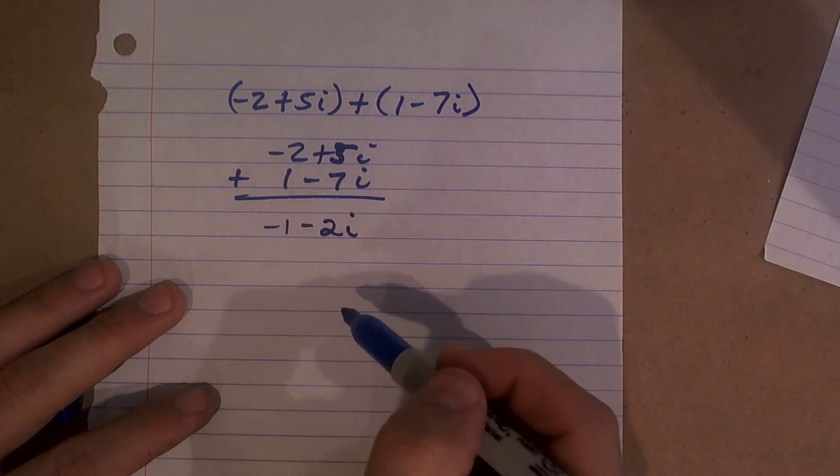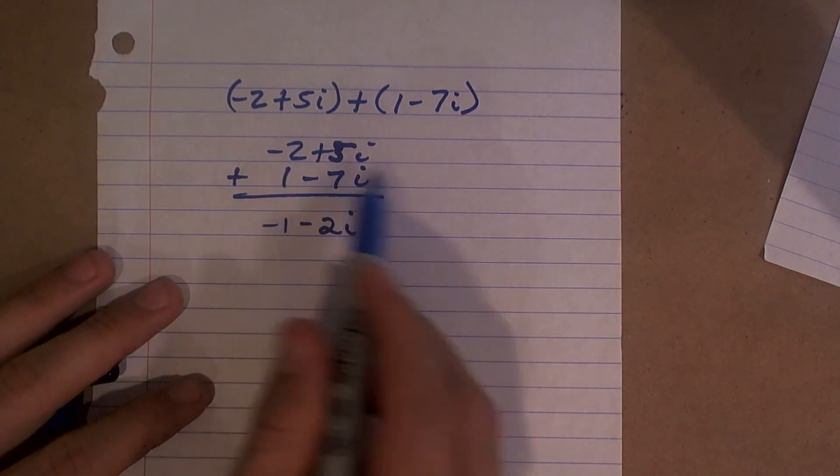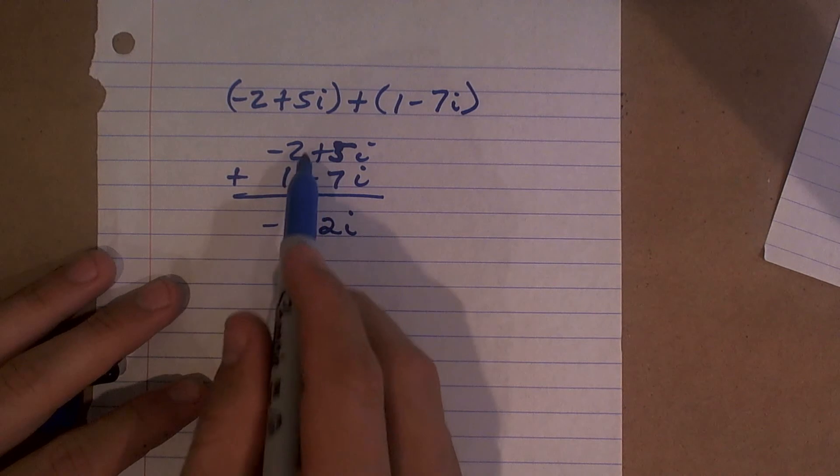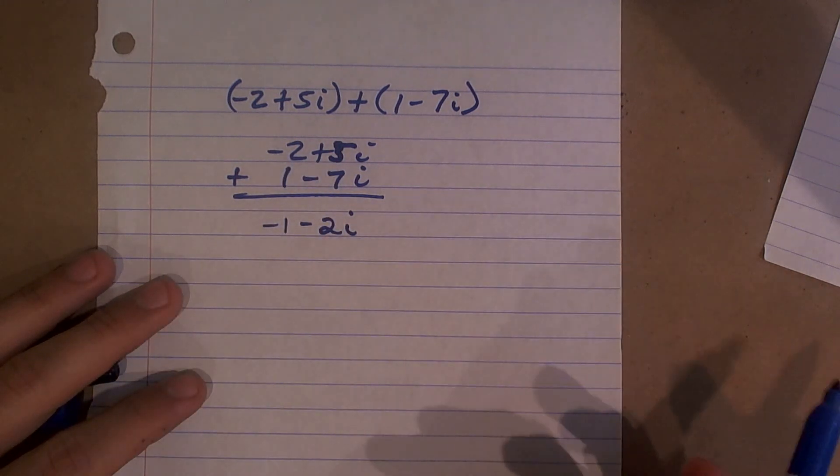Having them by this vertical method just allows us to add our like terms in a very easy manner.